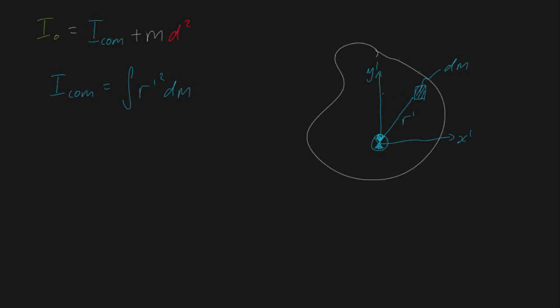In order to make this a little bit more generic, the distance of r-dash in the x coordinate system is going to have a distance x-dash, and this is going to be y-dash. But let's say we wanted to not calculate the moment of inertia around this axis — let's say we wanted to calculate the moment of inertia around this axis right here, where this right here is point O.